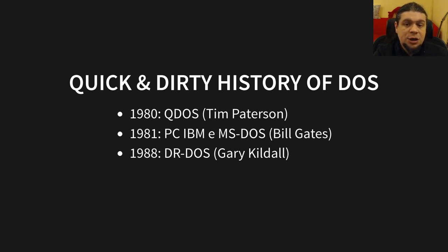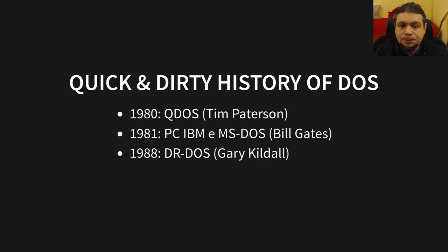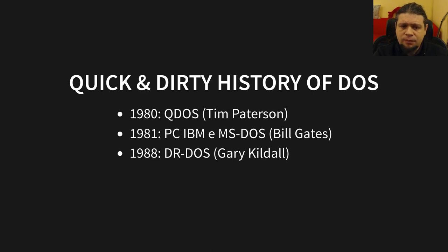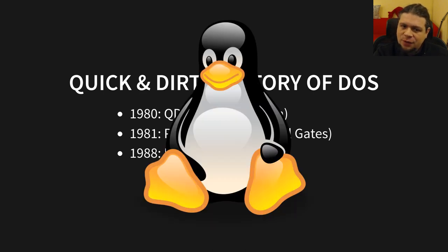Despite this, Digital Research at the beginning of the 80s tries to sell independently from IBM its CPM-86 operating system, which is compatible with IBM PCs, but its selling price was too high. Moreover, PCs already have MS-DOS pre-installed. Why should a user install a different operating system that is not compatible with the OS they already have?